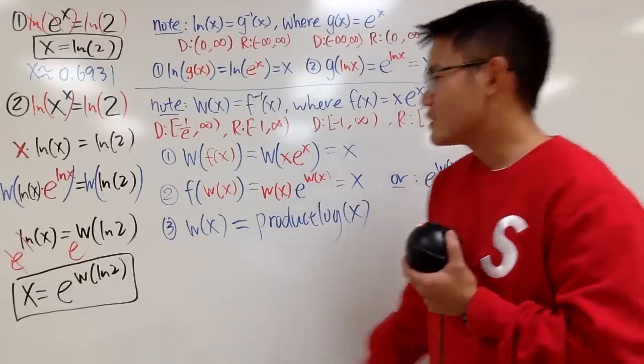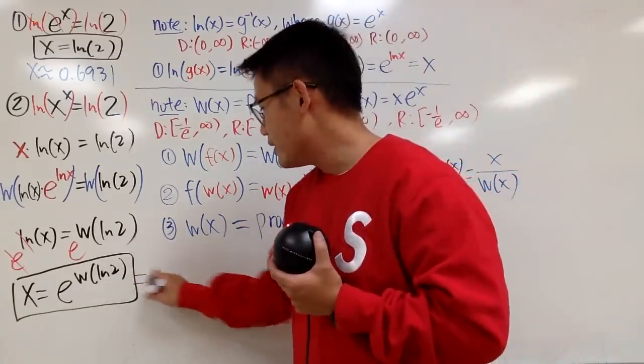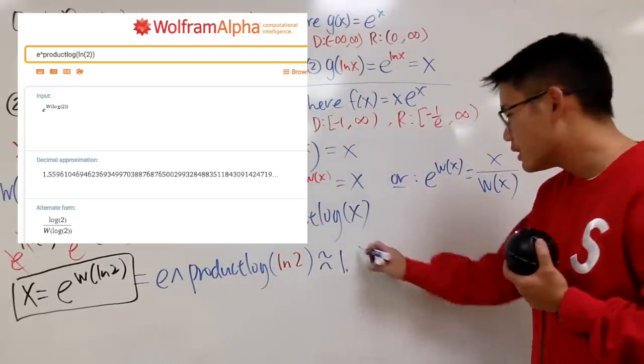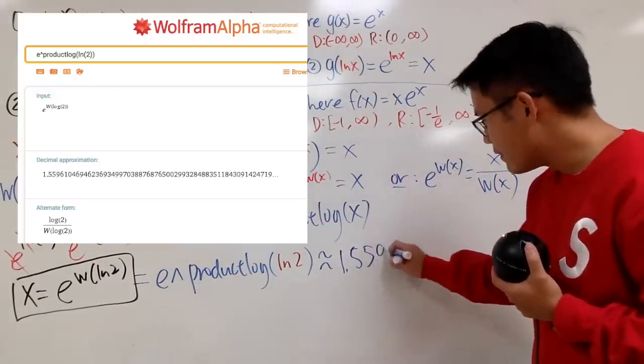So, if you would like, you can just enter this, and you get approximately 1.5596.